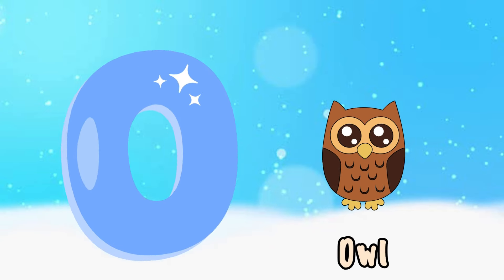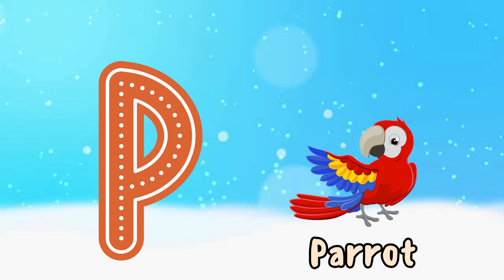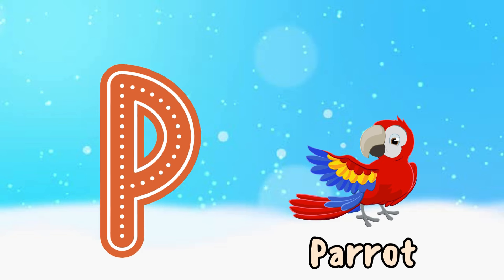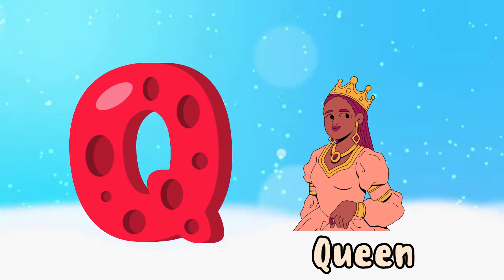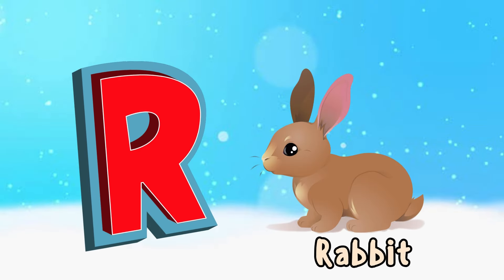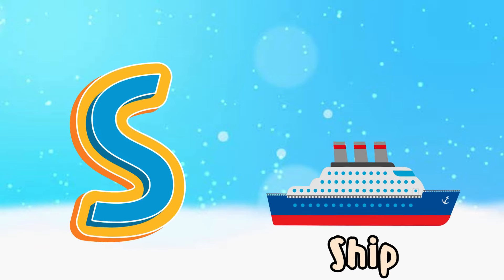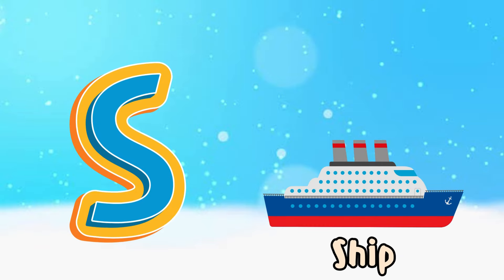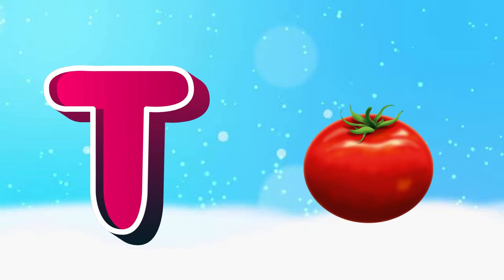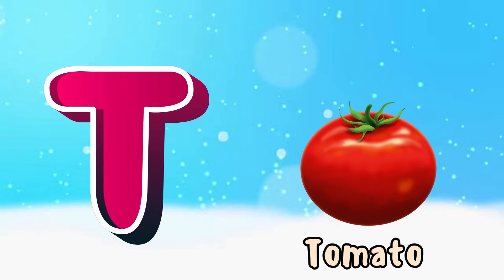P is for parrot, p-p-parrot. Dum-dee-da-dum-dee-dum. Q is for queen, quick-quick queen. R is for rabbit, ra-ra-rabbit. S is for ship, sh-sh-ship. T is for tomato, t-t-t-tomato.